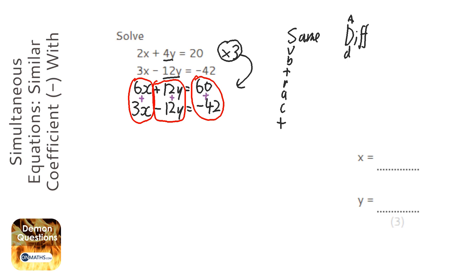So 6x plus 3x is 9x. 12y plus minus 12y, so that means 12y minus 12y is nothing, which is good. Because if it was something, then we wouldn't be able to do this question. And 60 take away 42 is 18.